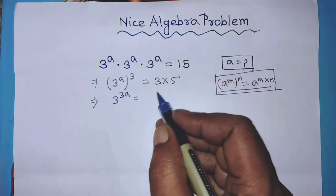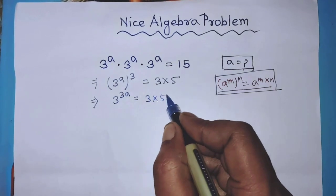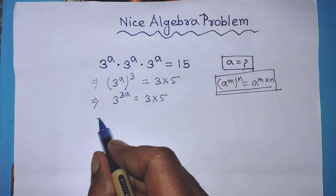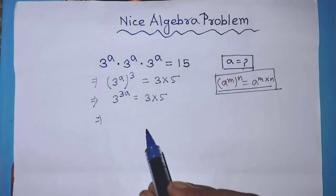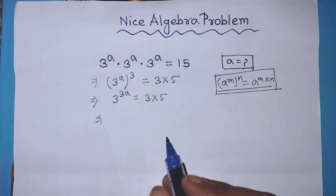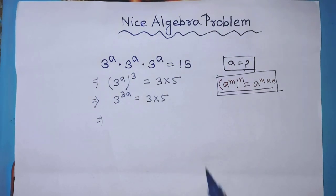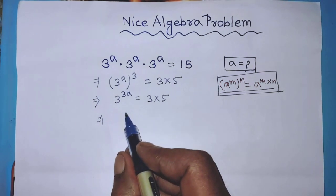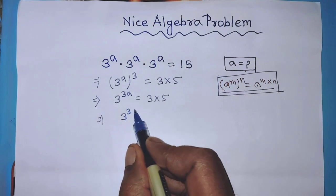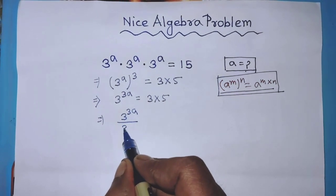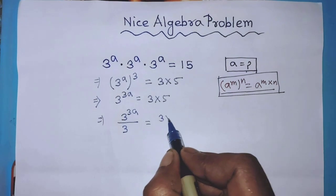On the right hand side we again write 3 times 5. After that, we have to divide the terms of the left hand side and right hand side of this equation by 3. Then we can write: 3 to the power 3 times a over 3 is equal to 3 times 5 over 3.